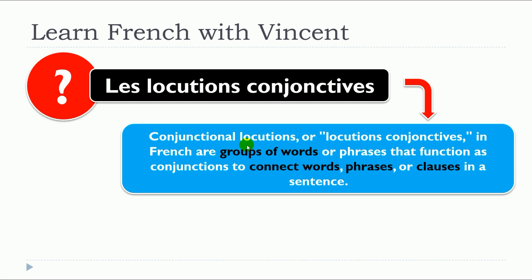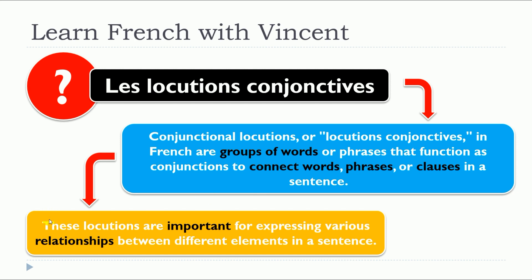Conjunctional locutions, or locutions conjonctives in French, are groups of words or phrases that function as conjunctions to connect words, phrases, or clauses in a sentence. These locutions are important for expressing various relationships between different elements in a sentence.